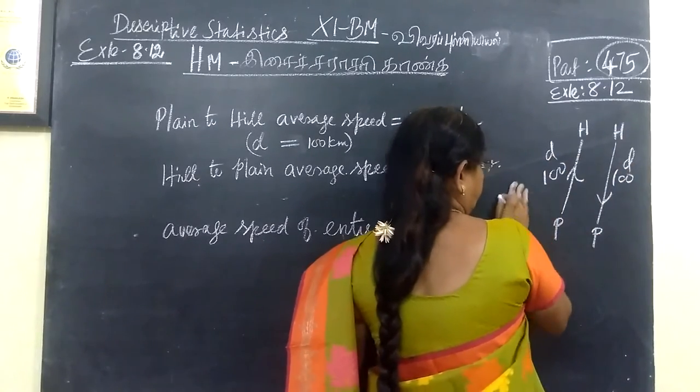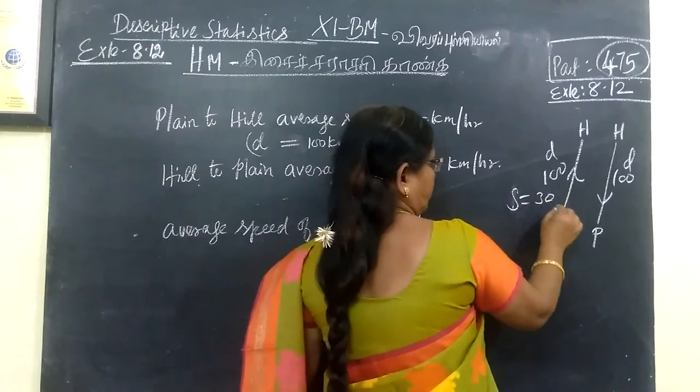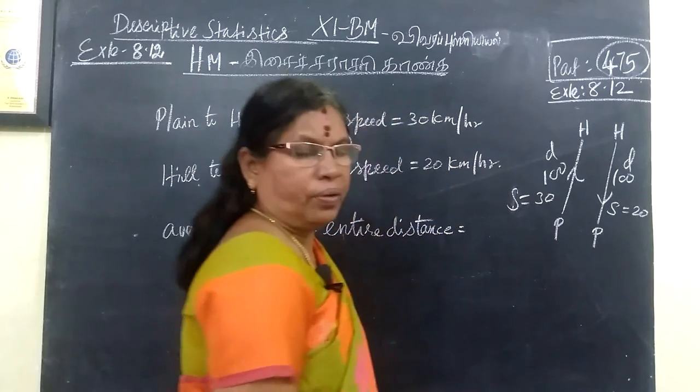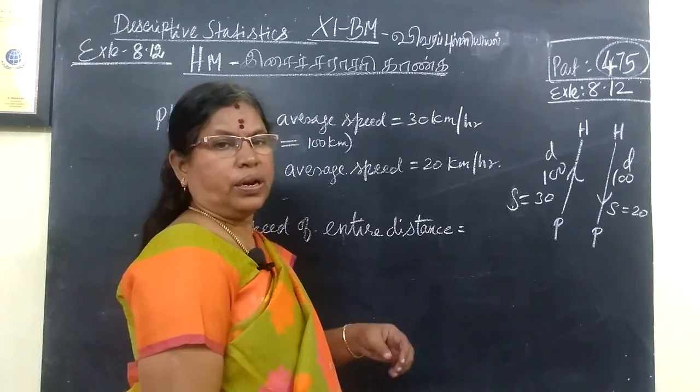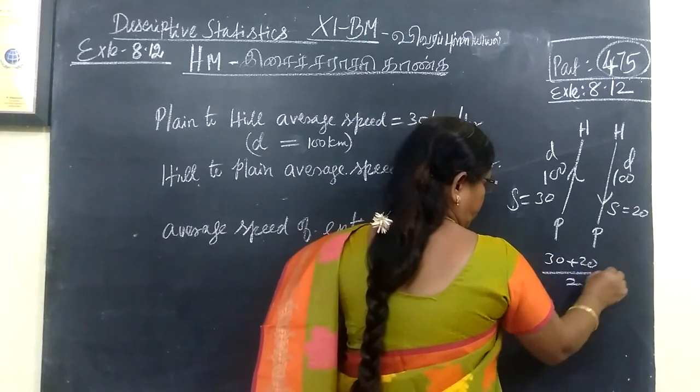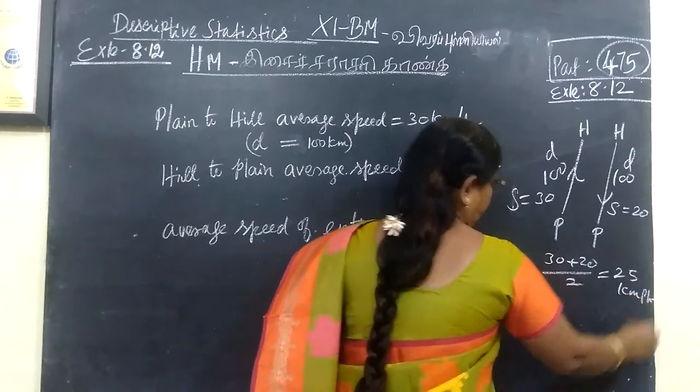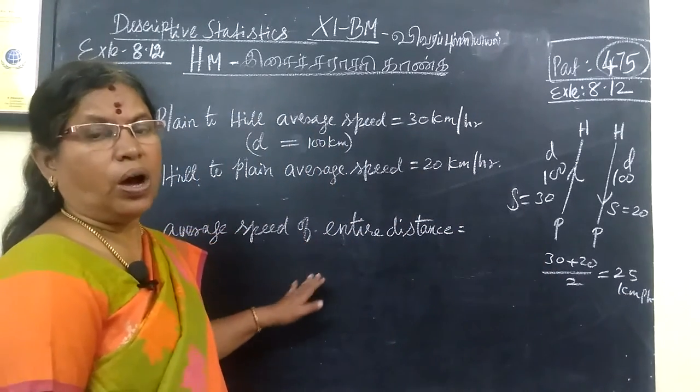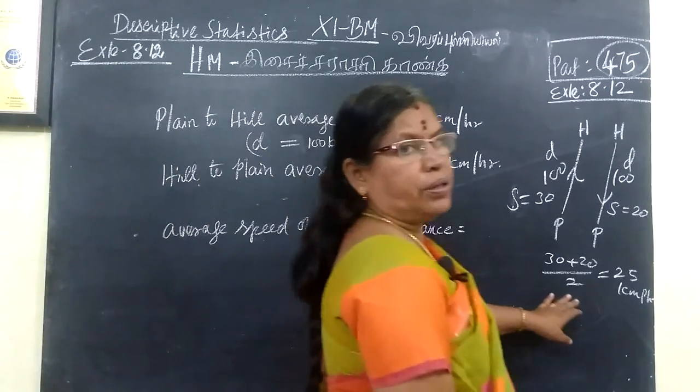The average speed is 30 km per hour, and here the average speed is 20 km per hour. Usually we use the arithmetic mean: 30 plus 20 divided by 2 equals 25 km per hour. But that is wrong. So in this way we are using harmonic mean. That is the correct procedure.